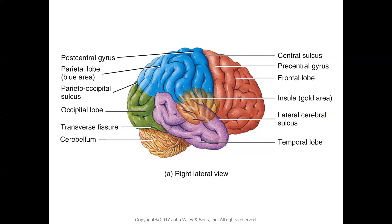Sulci and gyri increase the surface area of the brain, allowing many more cell bodies and neurons than would fit on a smooth surface — similar to how microvilli increase the absorption surface in the intestine. Some sulci and gyri are very prominent and consistent between individuals. The central sulcus separates the frontal lobe from the parietal lobe, the parieto-occipital sulcus separates the parietal from the occipital lobe, and the lateral cerebral sulcus separates the parietal and frontal lobes from the temporal lobe.